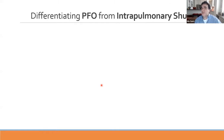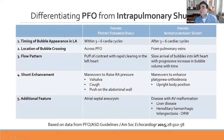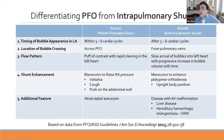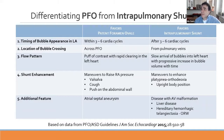How do we differentiate patent foramen ovale from intrapulmonary shunt? We should not use timing of bubbles as the only differentiator. PFO tends to show early bubble appearance within three to six cycles, while intrapulmonary shunt tends to have later bubble appearance. However, we should also look at the location of bubble crossing, flow pattern, shunt enhancement, and additional features.